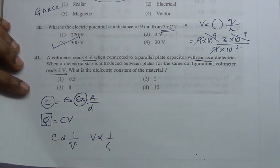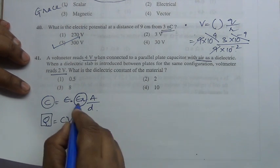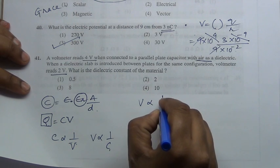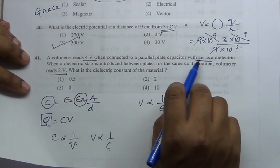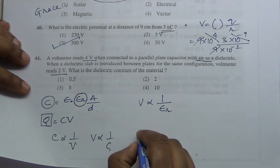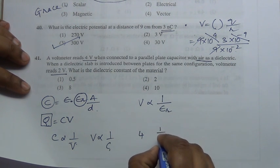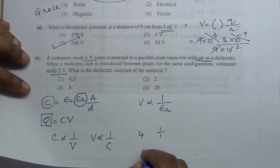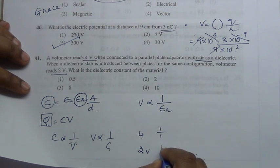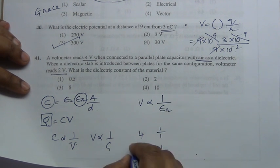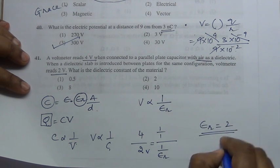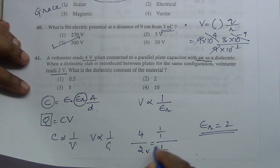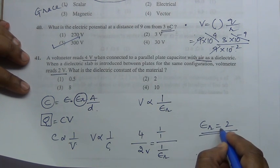Since V is inversely proportional to C, and C is proportional to εᵣ, we get V proportional to 1/εᵣ. With air as dielectric: 4 V corresponds to 1/1; with the slab: 2 V corresponds to 1/εᵣ. Dividing equation 1 by equation 2, εᵣ equals 2. The dielectric constant of the material is 2.